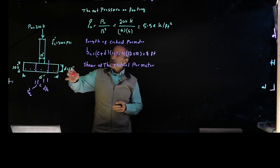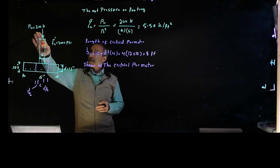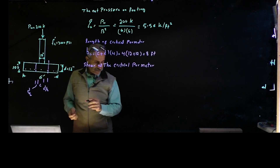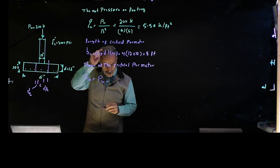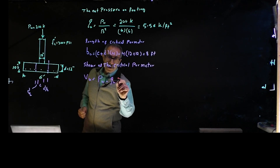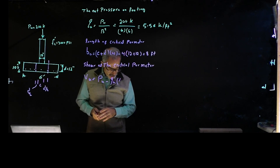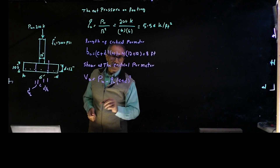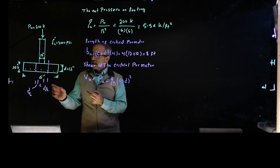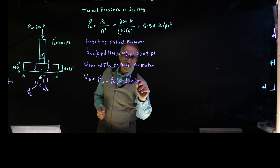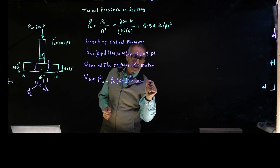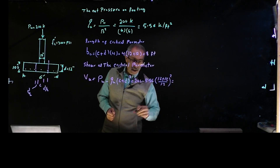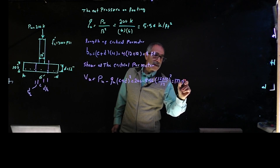Now we calculate the shear at the critical perimeter. VU equals PU minus QU times the area enclosed, where the area is (C plus D) squared. So that's 200 kips minus 5.56 kip/ft² times (12 plus 12 inches, converted to feet, squared). That gives us a factored shear VU of 177.7 kips.